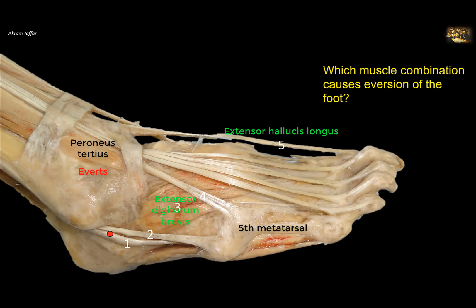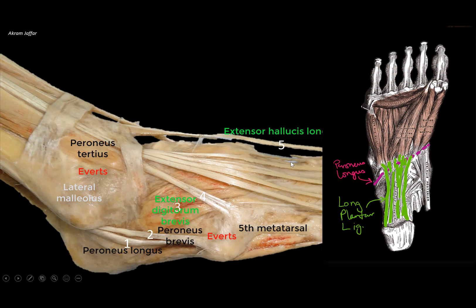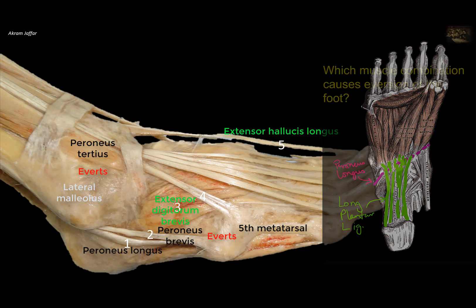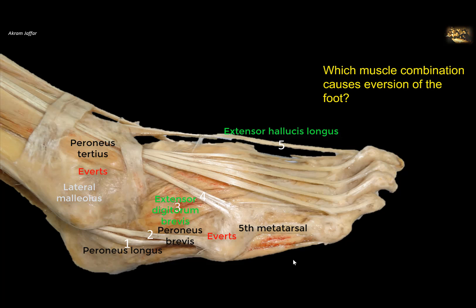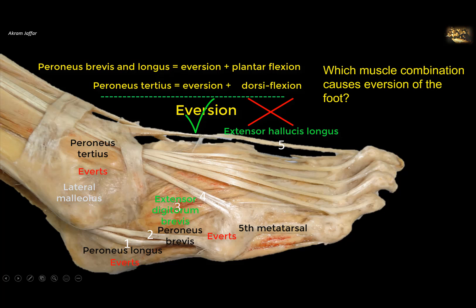Muscles one and two are in the lateral compartment. Two is peroneus brevis — the deeper tendon that grooves the lateral malleolus and attaches to the base of the fifth metatarsal — it pulls up on the lateral side of the foot and causes eversion. One is peroneus longus, the more superficial and longer muscle. It grooves the cuboid, passes on the sole of the foot, and reaches the medial side attached to the medial cuneiform and first metatarsal — pulling down on the medial side, causing eversion of the lateral side. When one and two contract, they produce both eversion and plantar flexion because they pass behind the ankle joint, while four — peroneus tertius — causes eversion and dorsiflexion. When all three peronei work together, the dorsiflexion cancels out the plantar flexion, and the combination produces pure eversion.